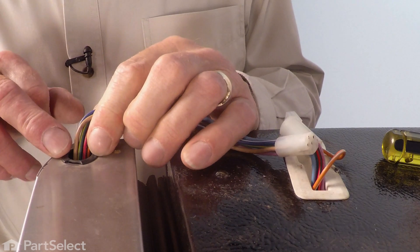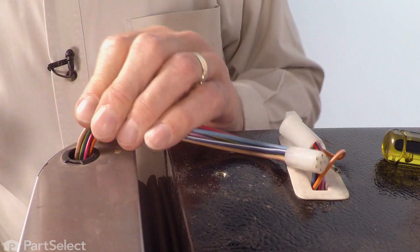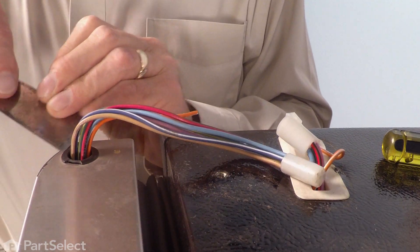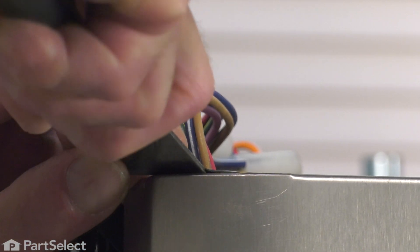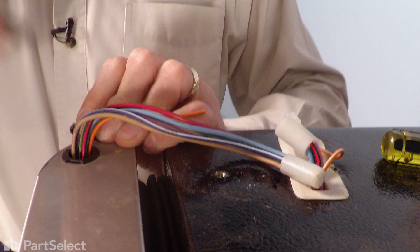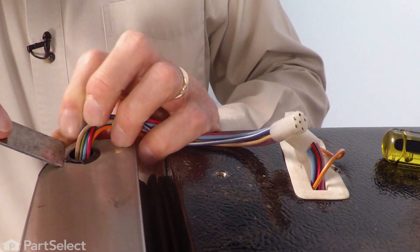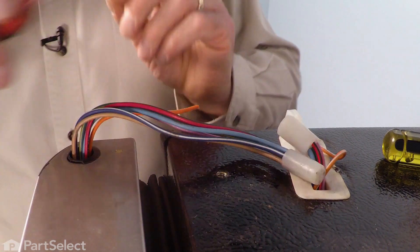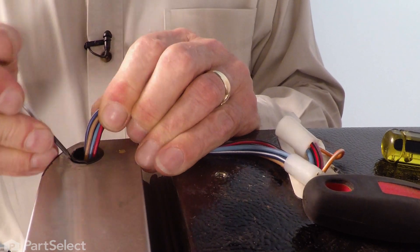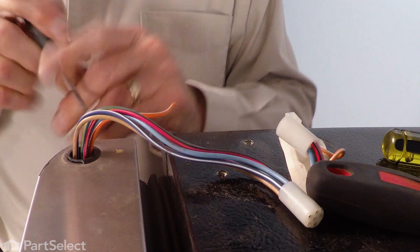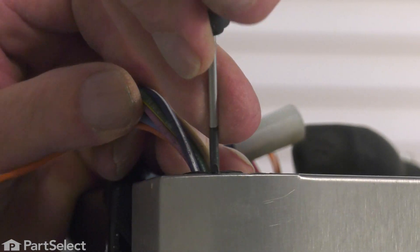Next, we need to try and pry that old hinge bushing out of the door. Typically, that plastic has gotten quite brittle, so it may break apart on you, but we'll start with a putty knife. Just go under the edge and try prying up on it. Then you may need to take a small flat blade screwdriver all the way around the edge and pry that up.